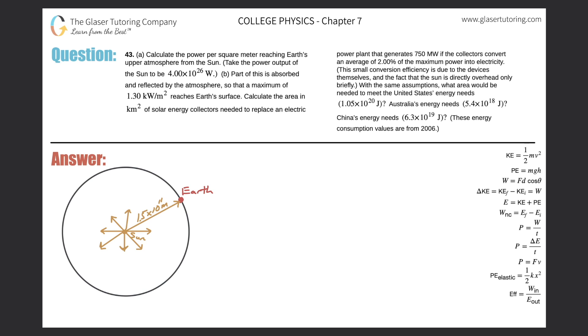Number 43, letter A. Calculate the power per square meter reaching Earth's upper atmosphere from the sun. Take the power output of the sun to be 4 times 10 to the 26 watts.